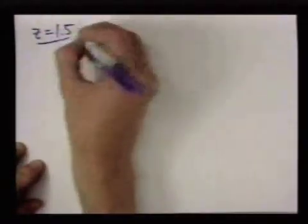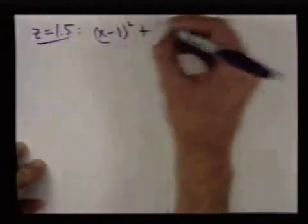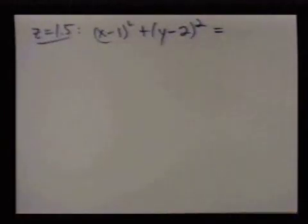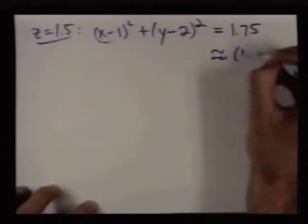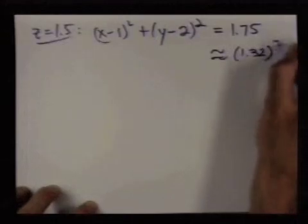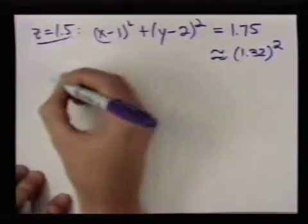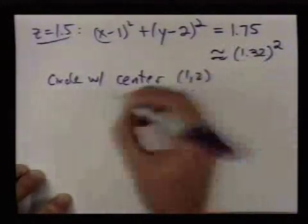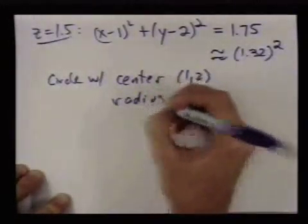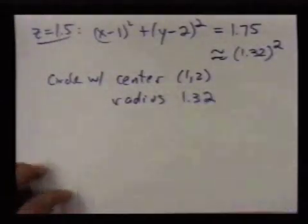Maybe I should do one more. When I set z equal to 1.5, going through the same sort of thing, you get x minus 1 squared plus y minus 2 squared equals 1.75. And that's roughly 1.32 squared. So we get a circle with center 1, 2 and radius 1.32.